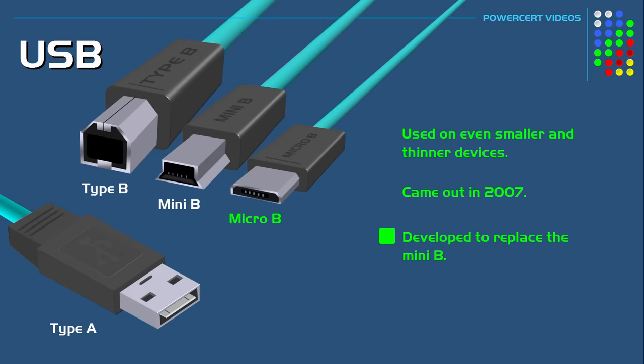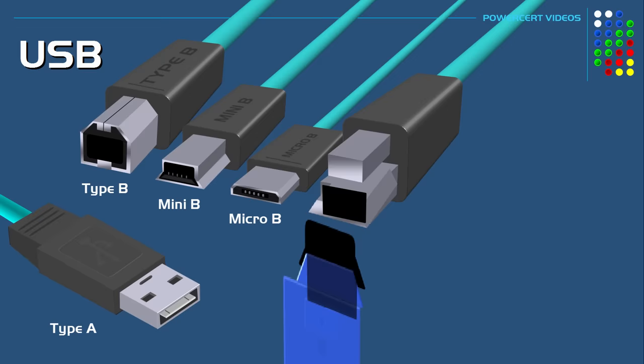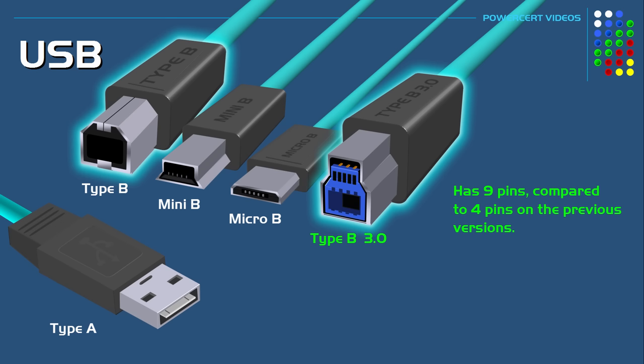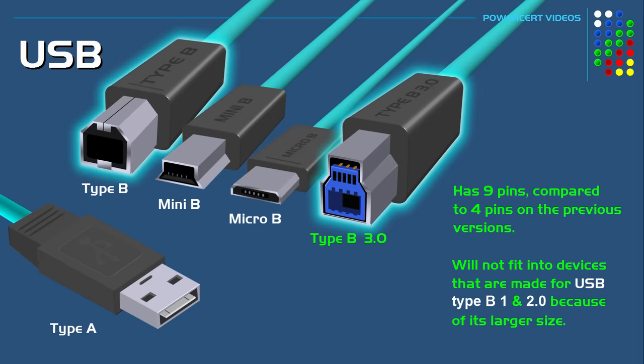There is also the USB 3.0 Type-B connector. The Type-B 3.0 has nine pins compared to four pins in the previous versions, which allows for higher transfer speeds and to supply power to a peripheral. To make room for the pins, the Type-B 3.0 is larger and has a different shape than the 1.0 and 2.0 versions, so it will not fit into devices made for USB 1.0 and 2.0.